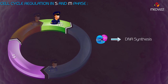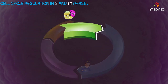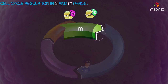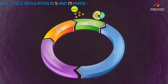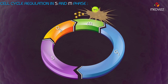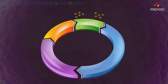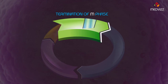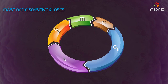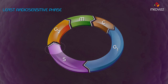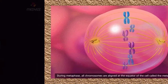In S phase, cyclin A-CDK2 is required for DNA synthesis. Cyclin A-CDK1 and cyclin B-CDK1 promote the events of mitosis. Towards the end of mitosis, the anaphase-promoting complex (APC) causes ubiquitination and destruction of cyclin A-CDK1 and cyclin B-CDK1, leading to termination of the M phase with anaphase, telophase, and cytokinesis. The most radio-sensitive phases are G2 and mitosis; the least radio-sensitive phase is the latter part of S phase.